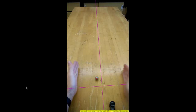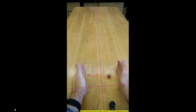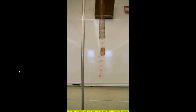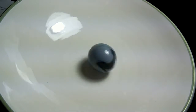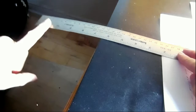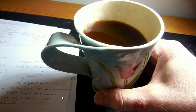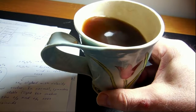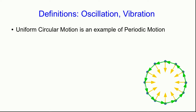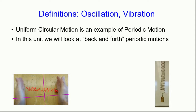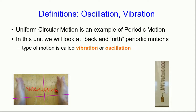Periodic motion is just any motion that repeats itself, such as a ball rolling back and forth between my hands, or a mass oscillating up and down on a spring, or a pendulum going back and forth, a ball oscillating back and forth in the bottom of a bowl, a ruler vibrating, or the motion of the coffee in a mug that's been disturbed. We've already seen an example of periodic motion because uniform circular motion is a repeating motion and so it's periodic. But we're now going to focus on periodic motions that go back and forth instead of around in circles.